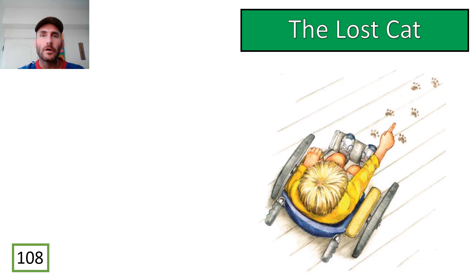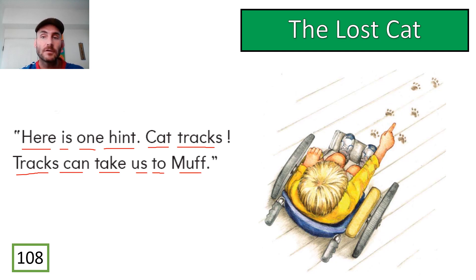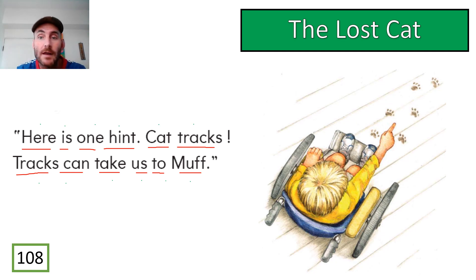Oh wow, look at page 108 guys — what do you see? I would like you to continue reading the same way: you start with the first word and end with the last word, you guys read first, then we'll read together with Mr. Pan. Let's read together — here is one hint: cat tracks! Cat tracks can take us to Muff. So they see the cat tracks from the cat's feet walking somewhere, and now they are going to look to see if they can find Muff the cat.